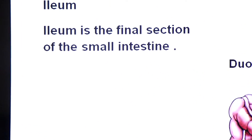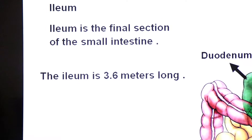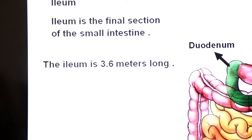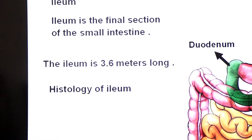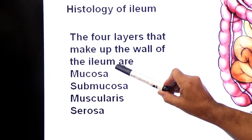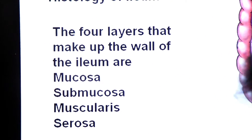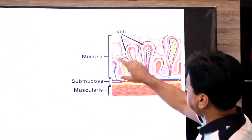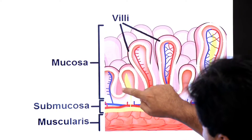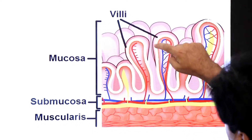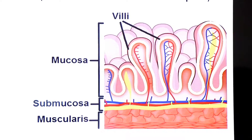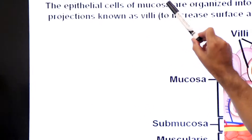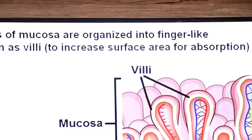The ileum is the final section of the small intestine and is about 3.6 meters long. Its four histological layers are mucosa, submucosa, muscularis, and serosa. From the mucosa layer, finger-like projections appear called villi. The epithelial cells of the mucosa are organized into these finger-like projections known as villi, to increase the surface area for absorption of digested food.